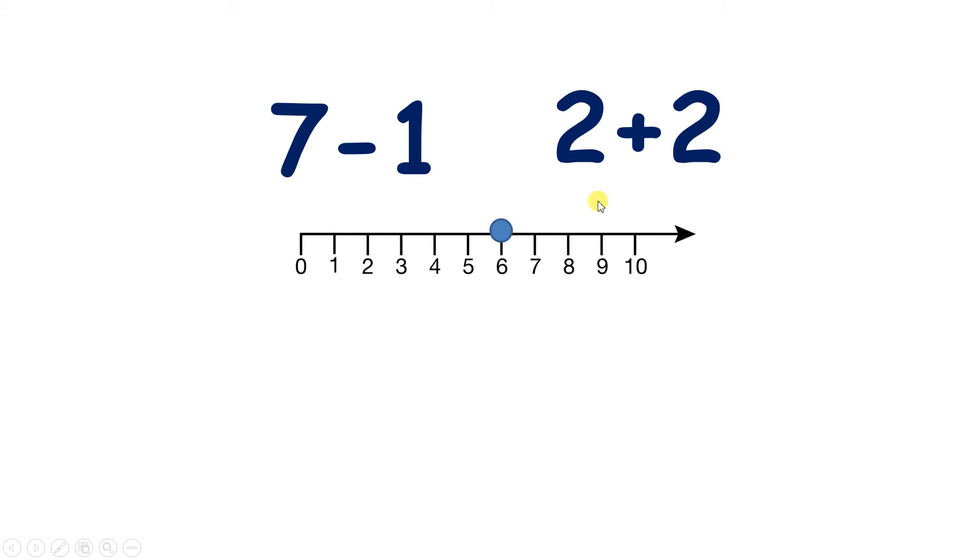And now let's look at 2 plus 2. If we're on 2, and we go along 1, 2, we get to 4. So is 7 minus 1 greater or less than 2 plus 2?